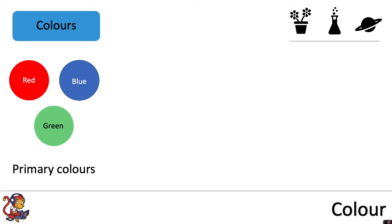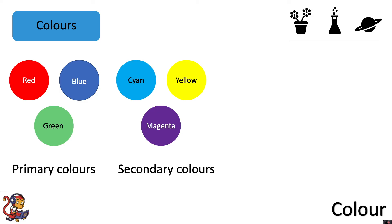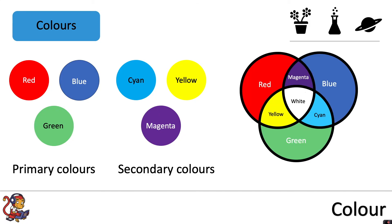You can mix the primary colours to get some secondary colours of cyan, yellow and magenta. This diagram shows how you would mix the primary colours to get the secondary colours. Mixing red and blue light gives you magenta. Mixing blue and green light gives you cyan. And mixing green and red light gives you yellow.